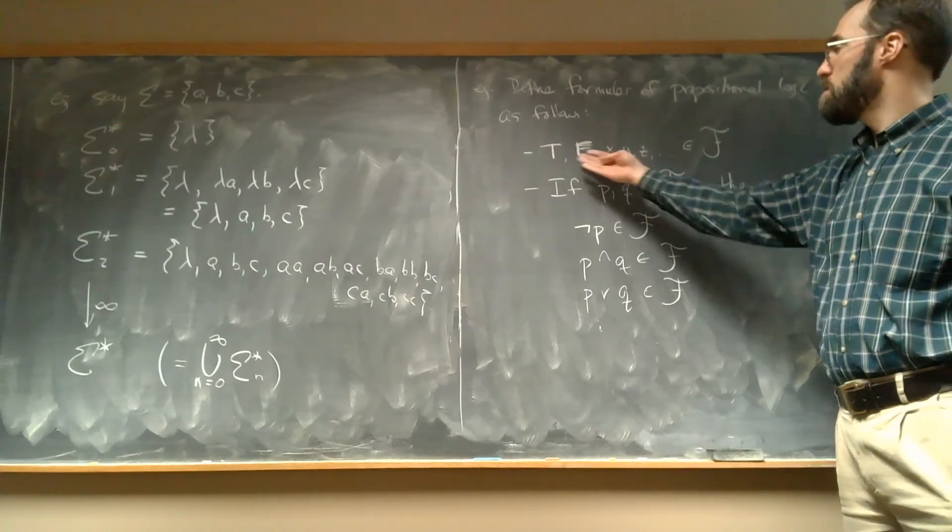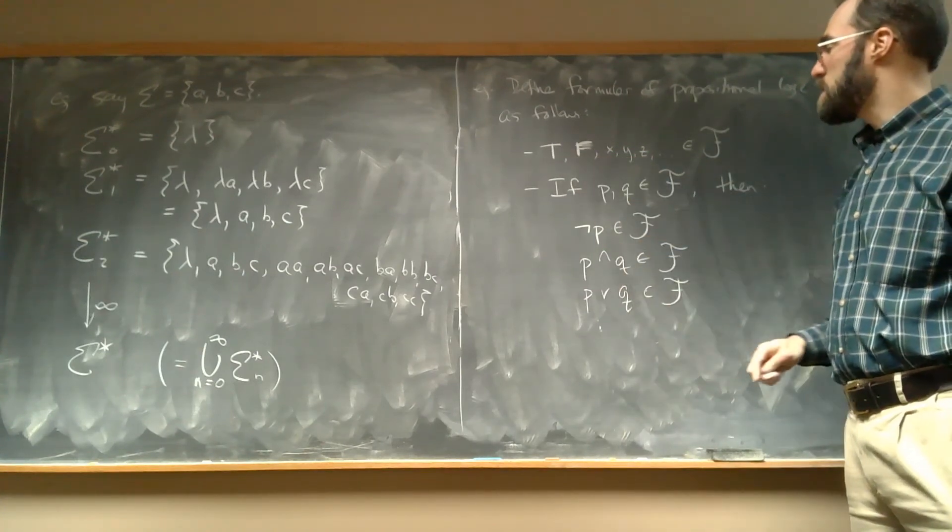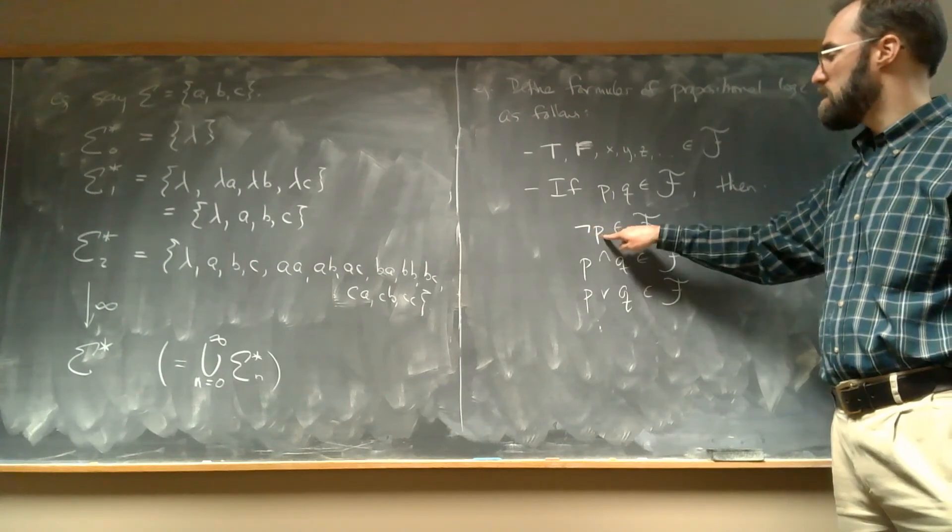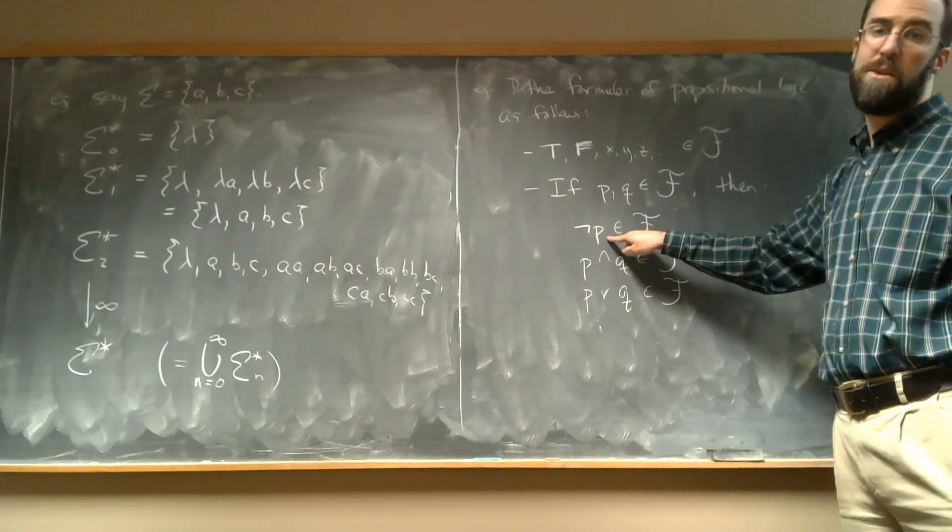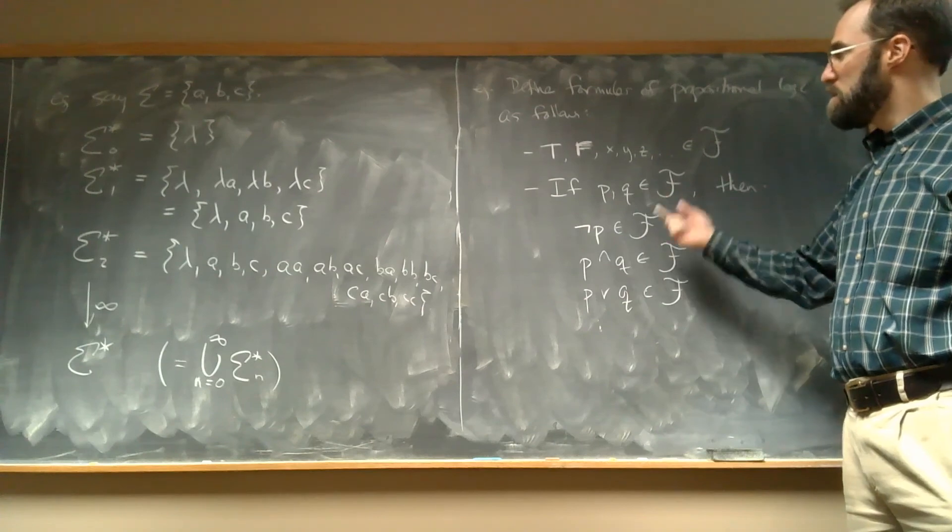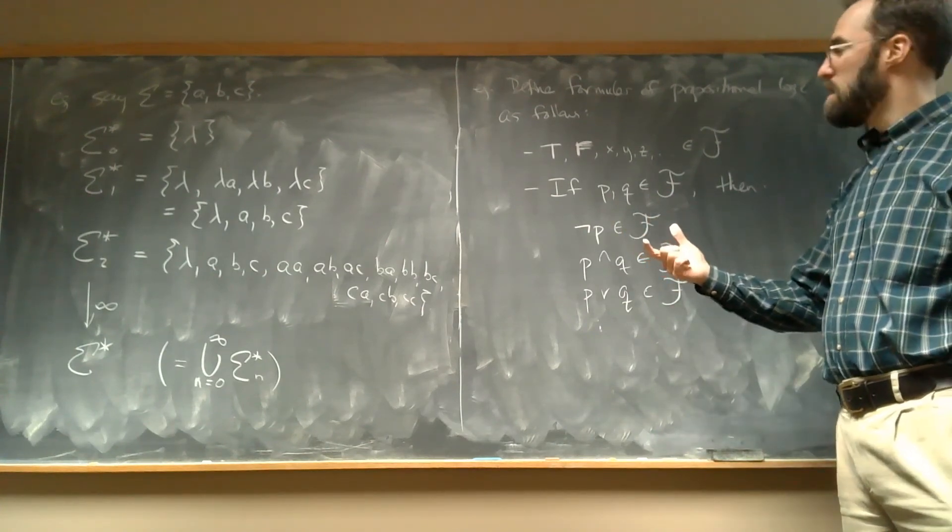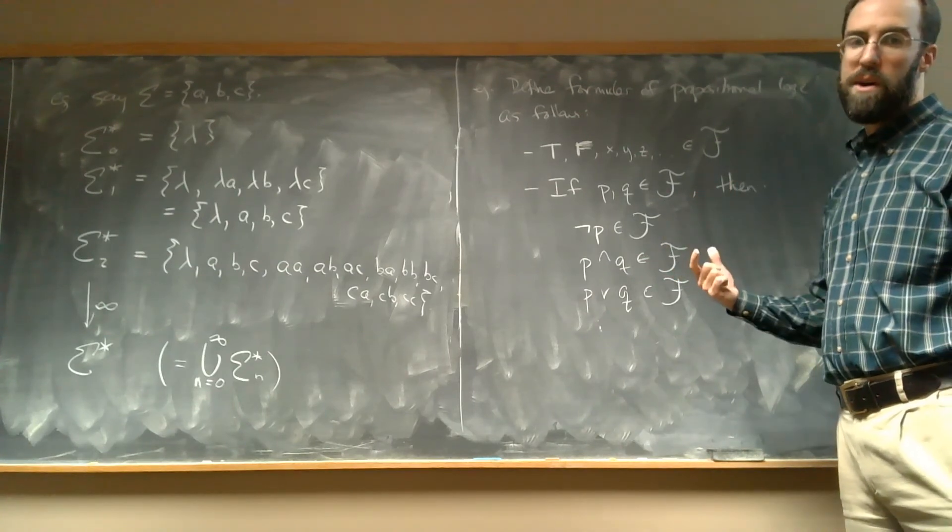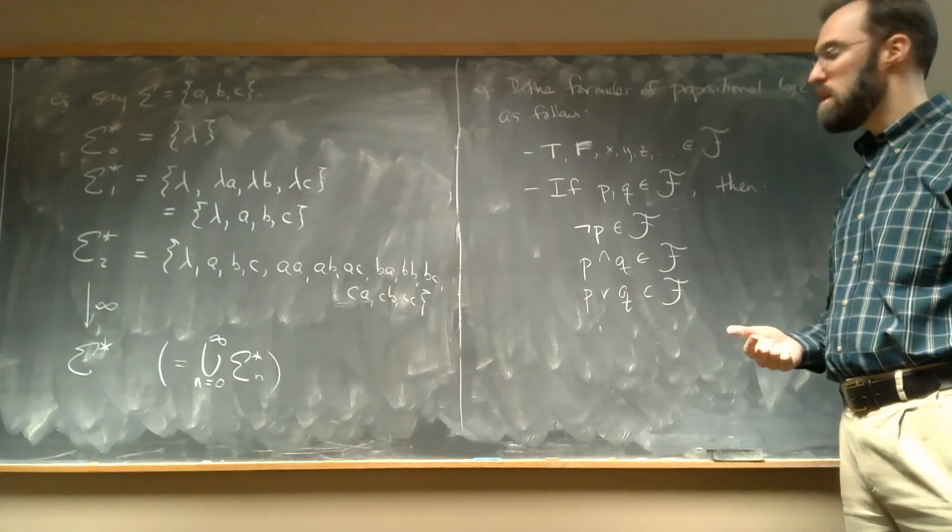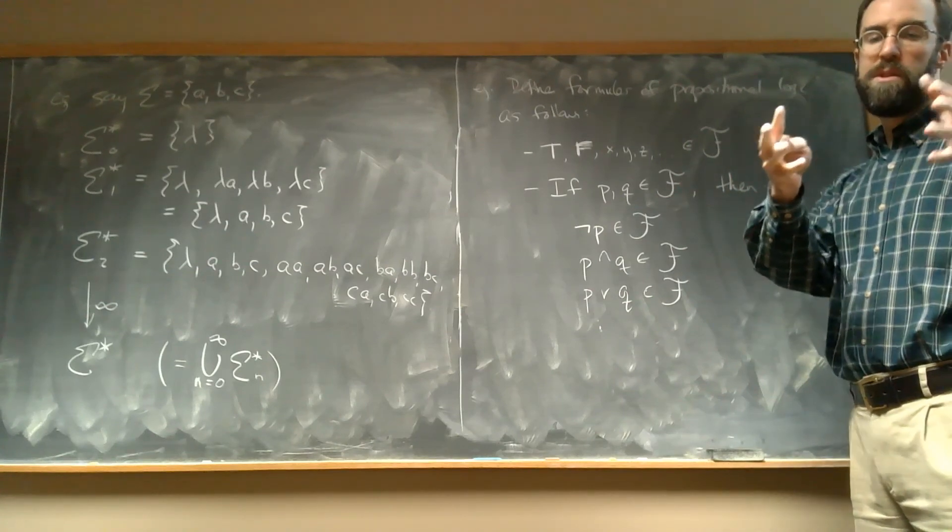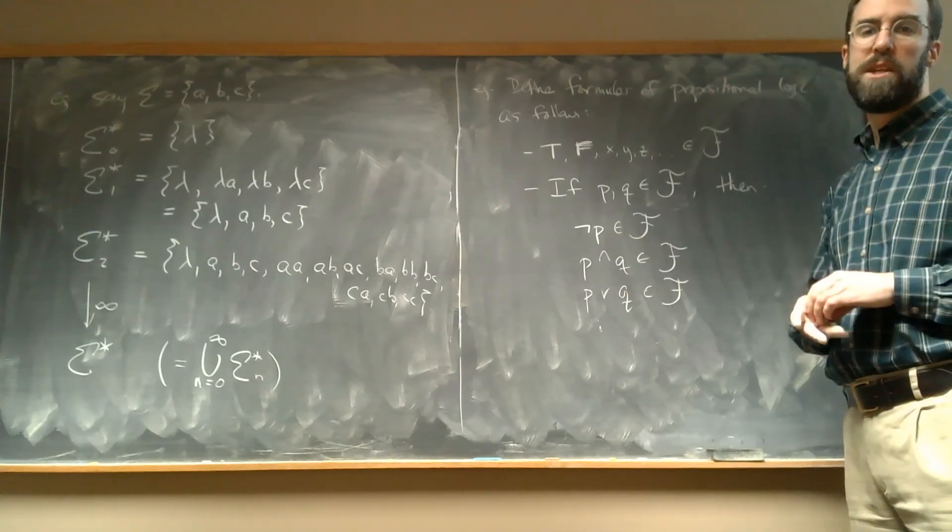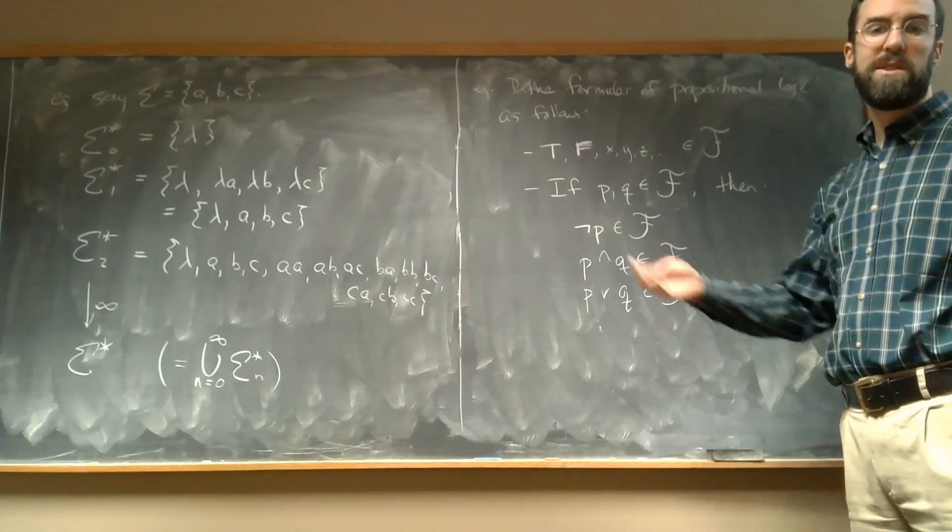So stage zero is we just have these things. At stage one, we start to get things like, well, x is in there. So I can always put not of anything that's in there. So I could have not x. I could also have like true and y. If I do the next stage, I'm going to get, like, now that I have true and y in there, I could do not true and y, or I could do true and y or z. And the more times I repeat that process, the bigger and bigger formulas that I'm going to get, as I'm taking formulas that were there and combining them with and or not, that kind of thing. And if we do this, imagine doing this infinitely many times, we're going to get all the possible formulas of propositional logic.